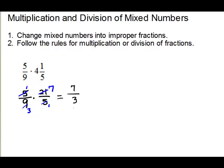In algebra we usually prefer an improper fraction, so 7 thirds is fine. However, in this section the book will switch it back to a mixed number since the original problem had mixed numbers — and I would accept either on a test. To change 7 thirds back to a mixed number, divide the denominator into the numerator: 3 into 7 goes 2 times, multiply back, 2 times 3 is 6, subtract, and the remainder goes back over the divisor as 1 third. So 7 thirds equals 2 and 1 third.